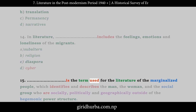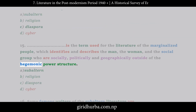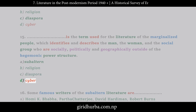Question 15: Which is the term used for the literature of the marginalized people, identifying and describing the man, the woman, and the social group who are socially, politically, and geographically outside of the hegemonic power structure? A. Subaltern. B. Religion. C. Diaspora. D. Cyber.